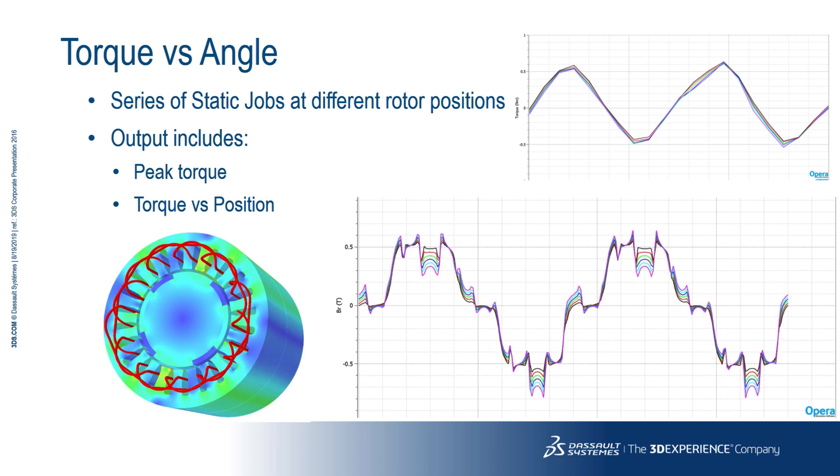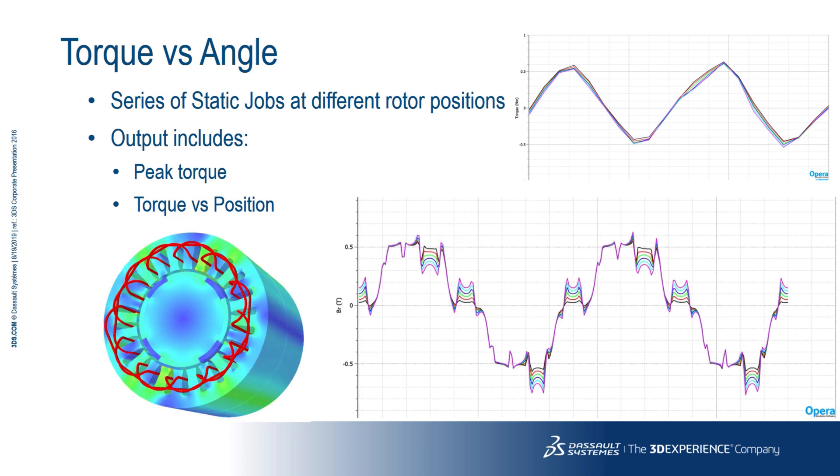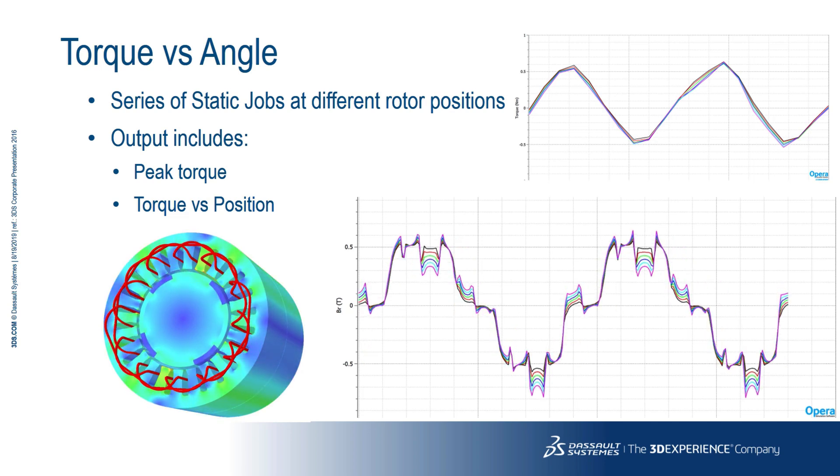The torque versus angle analysis creates a series of static jobs for different rotor positions. The output includes the value of peak torque, its mechanical angular position and the torque versus position curve.